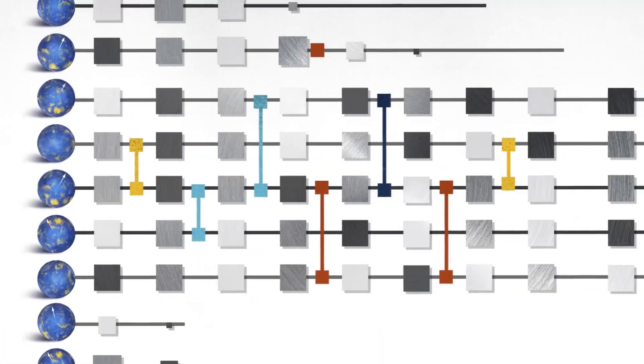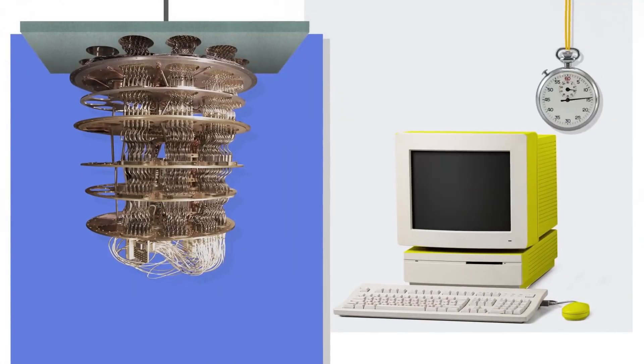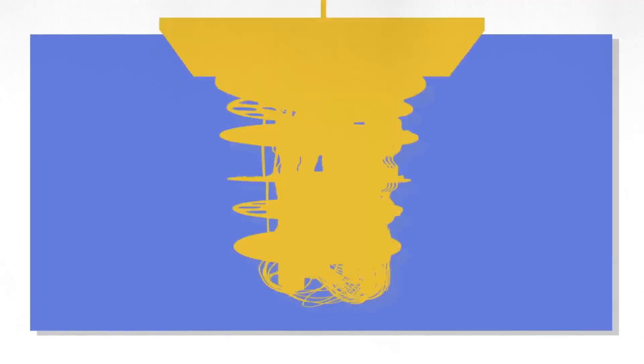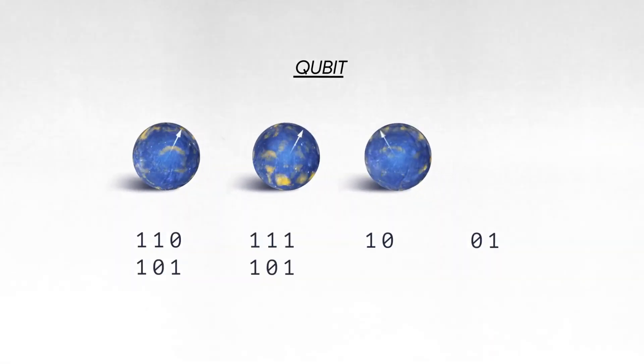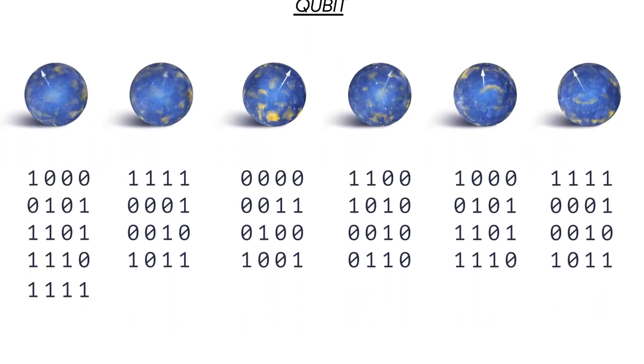quantum computers use qubits. Classical computers manipulate bits with blistering speed, while quantum computers manipulate qubits with exquisite control, allowing for the interface of information, like waves on a pond, to amplify the answers we seek in a pool of possibilities.